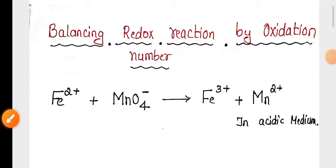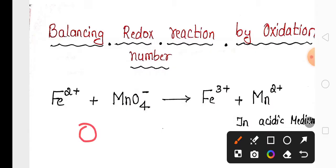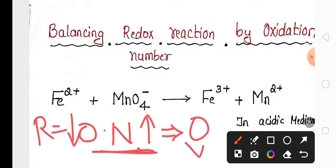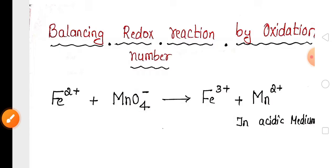Balancing redox reactions by oxidation number: if the oxidation number is increasing, it is responsible for oxidation. If the oxidation number decreases, it is considered as reduction. Increase in oxidation number is oxidation; decrease in oxidation number is reduction.